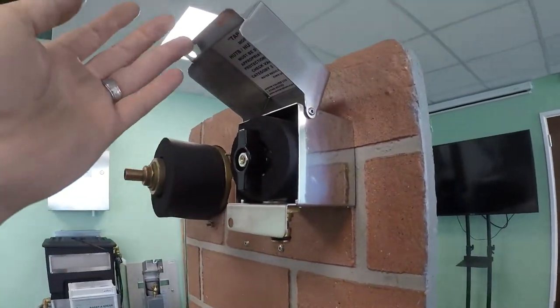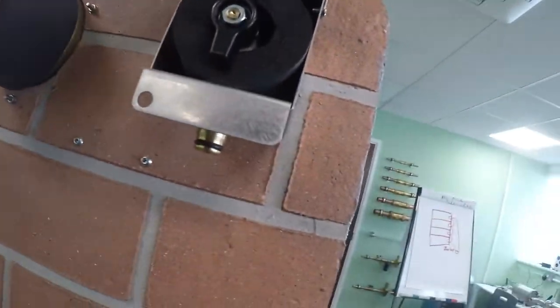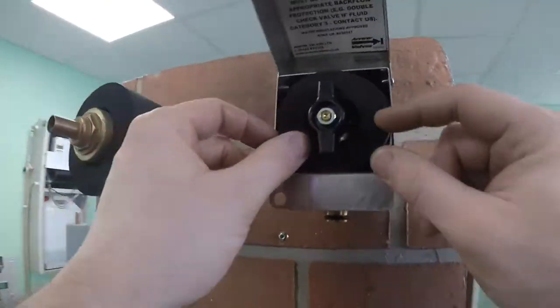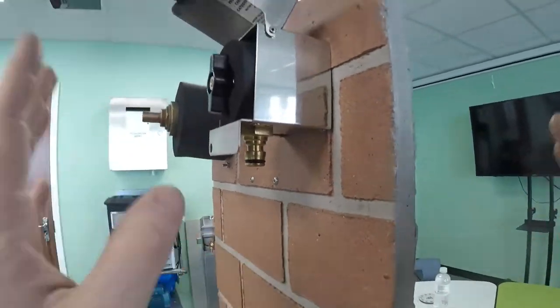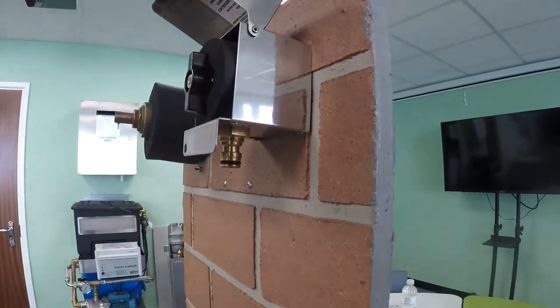In this video I'm going to show you how to replace the ball valve on your HUTB. First of all, most importantly, as always, you need to isolate the water. Once that's done, you can open that and make sure there's no water coming out.